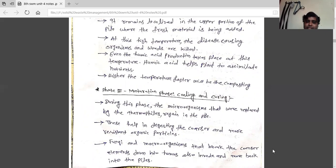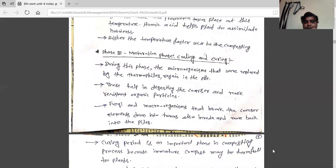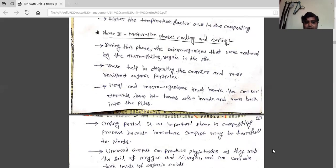Last is phase three, the maturation phase, also known as cooling. This last phase is the maturation phase where both cooling and curing are important. During this phase, the microorganisms that were replaced by the thermophilic bacteria again appear in the pile, helping to disseminate the coarser and more resistant organic particles. Fungi and microorganisms break the coarser elements down into humus.